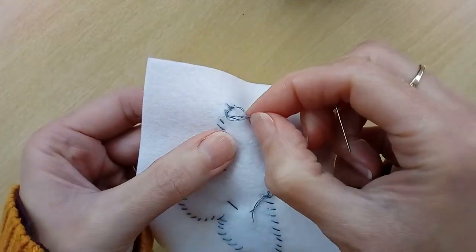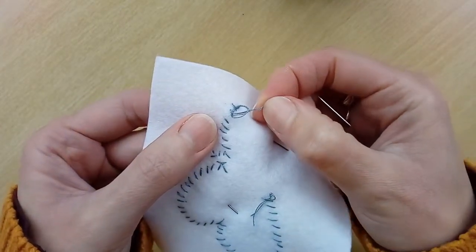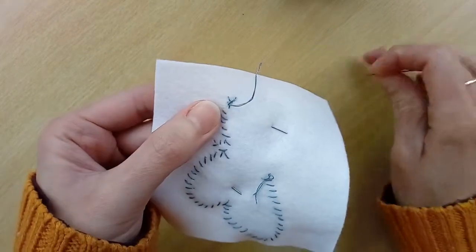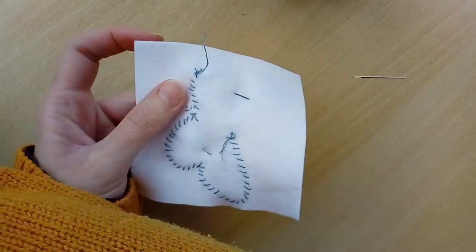Then you can just grab those ends of thread and pull them to fasten it off, and you just need to trim the excess.